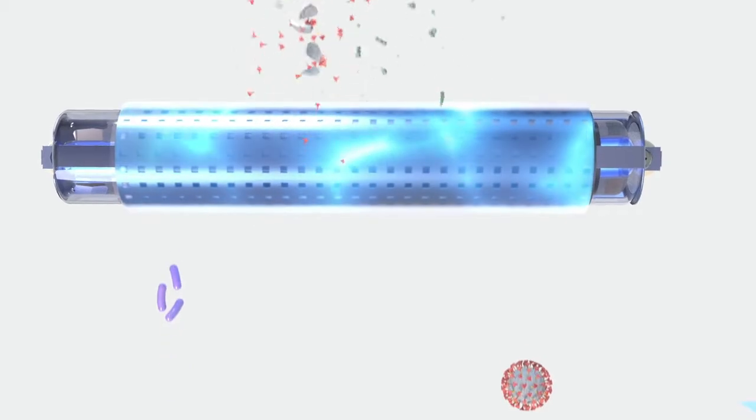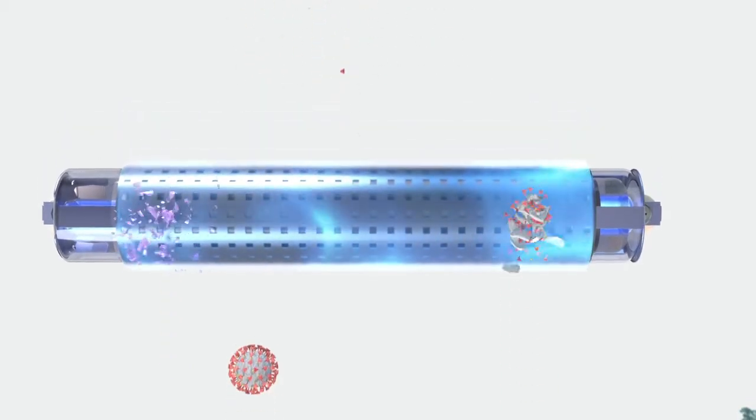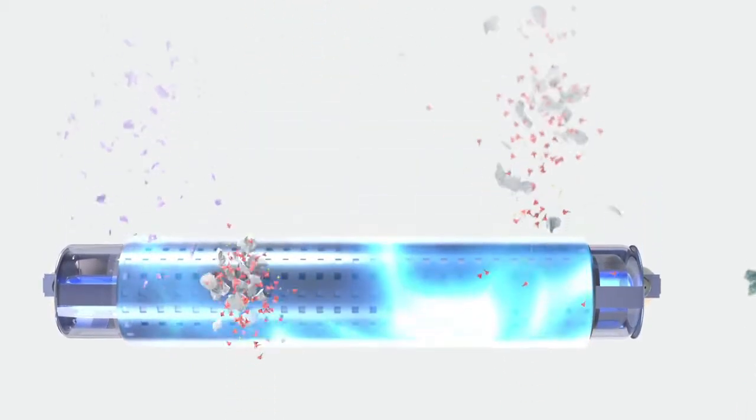Nanostrike's effectiveness lies within its ability to kill and deactivate even the smallest nano-sized pathogen on contact. As microorganisms pass through the Nanostrike plasma field, they are rendered inert and deactivated. Therefore, only harmless dead pathogen debris emerges from the field.